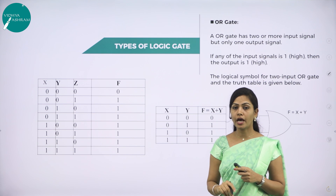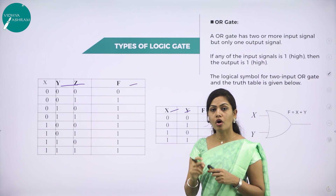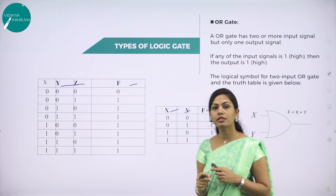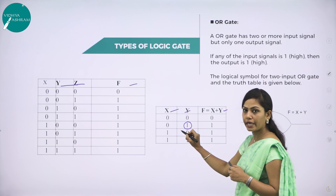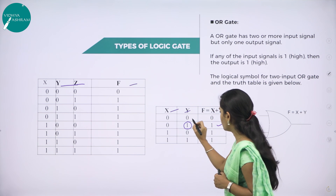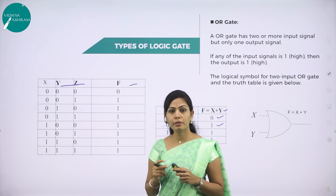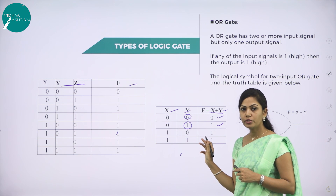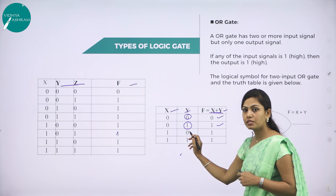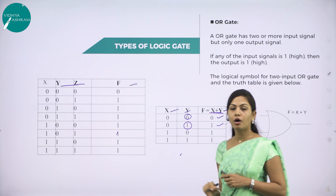Next, we have the OR gate. The OR gate has two or more input signals but only one output signal. This gate gives the logical addition of the inputs. If any of the input signals or both are high, the output signal is also high. If all input signals are low, the output is also low. The truth table for OR gate: 0+0=0, 0+1=1, 1+0=1, 1+1=1.